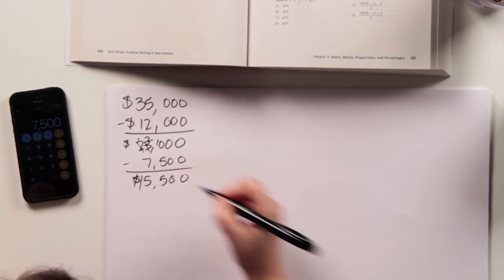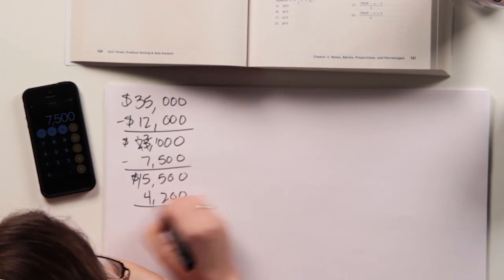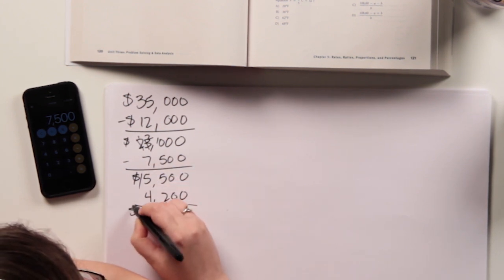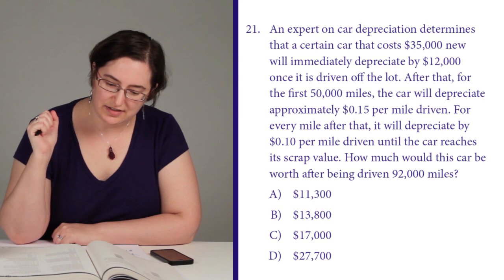That car is depreciating a lot. Then every mile after that, it's $0.10 per mile. So when it's driven 92,000 miles, I've already driven 50,000. So I need to go another 42,000 miles — going on road trips across the country apparently. $42,000 times a tenth is going to be $4,200. And subtract — so it should be $11,300. And if I look at my answer choices, there it is: answer choice A. Awesome.